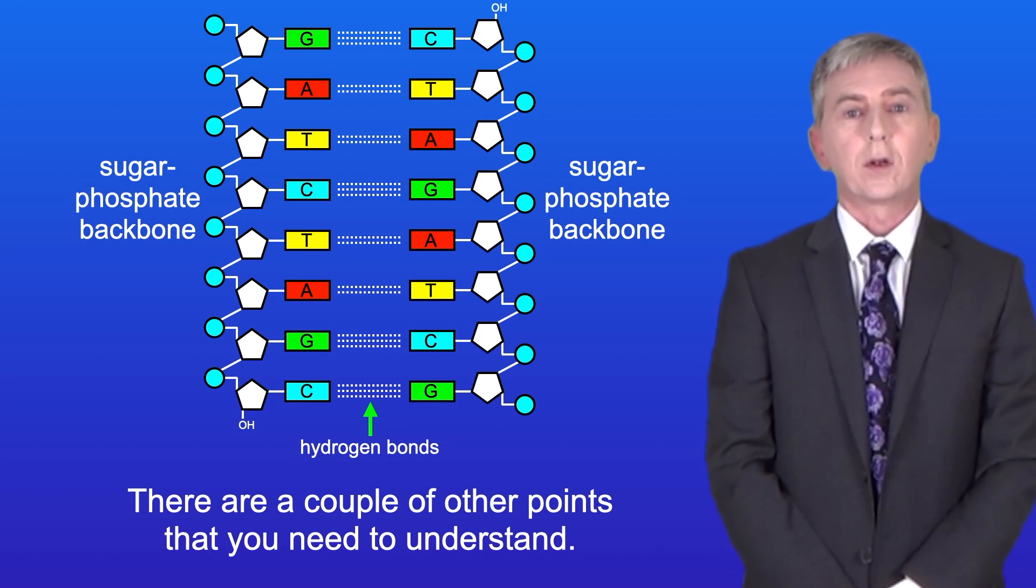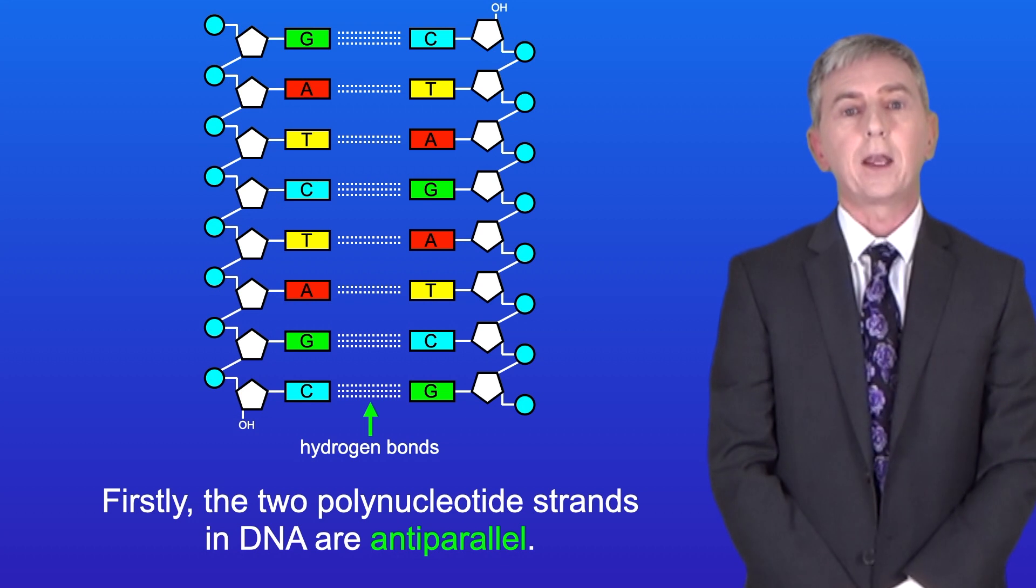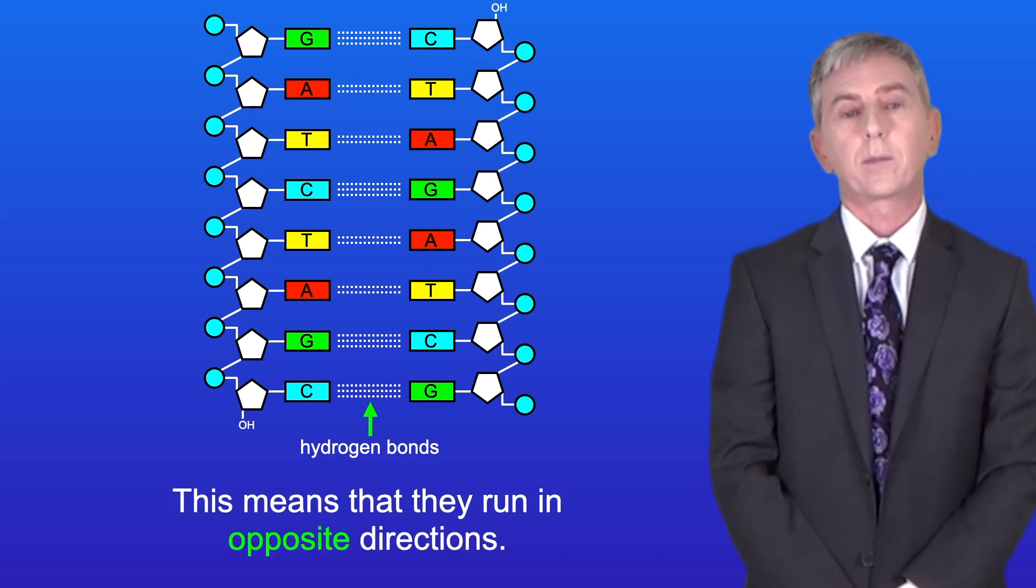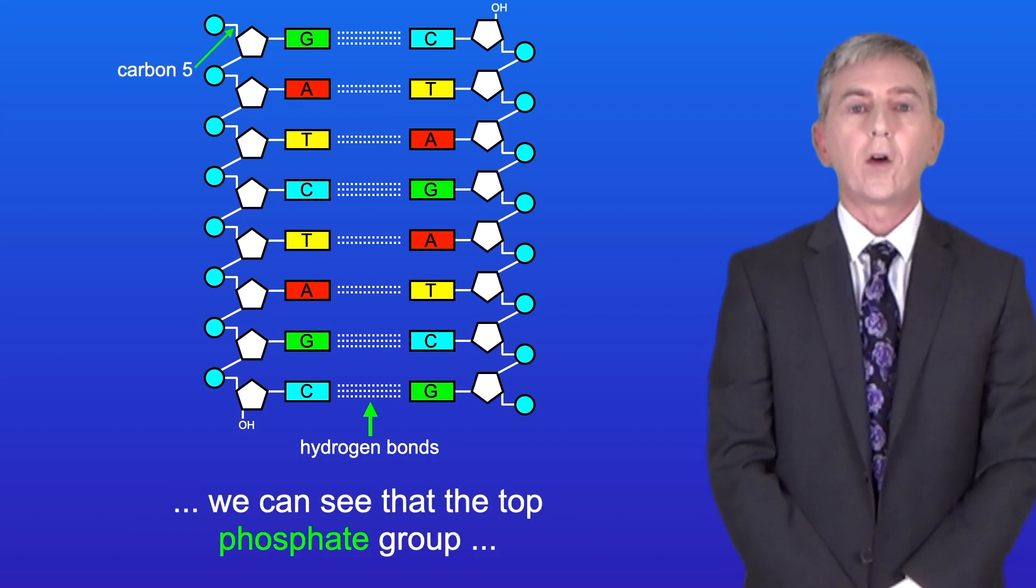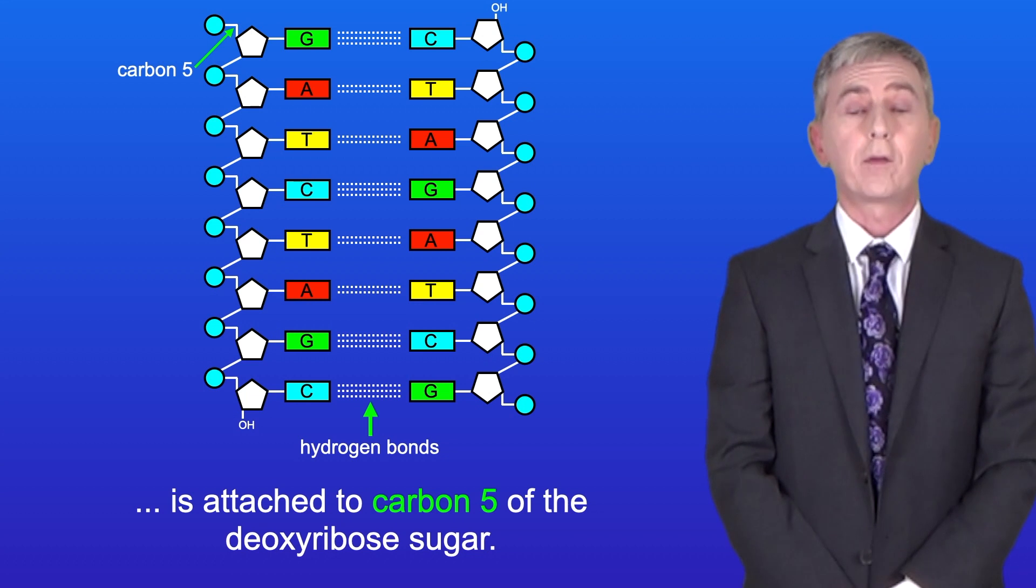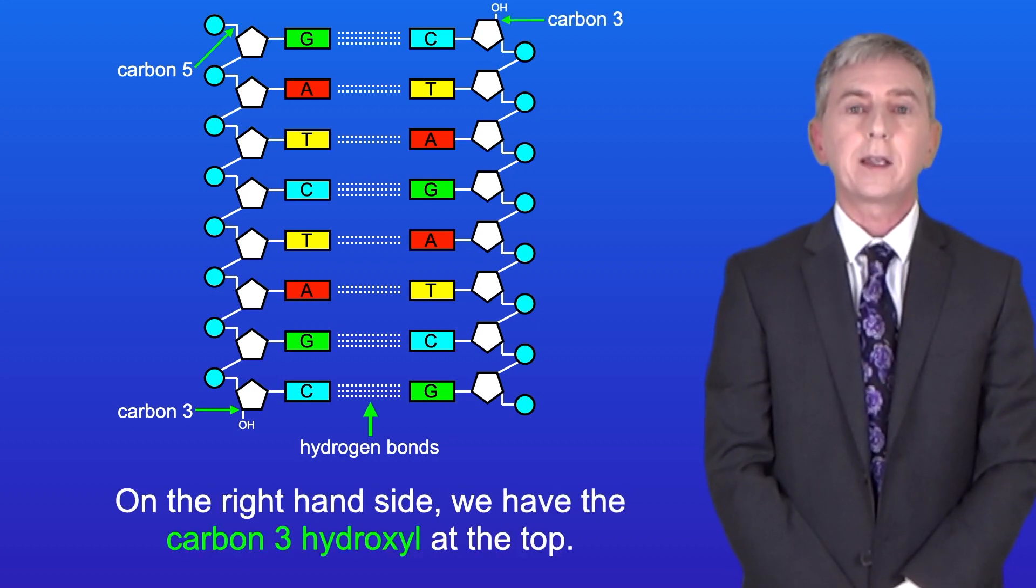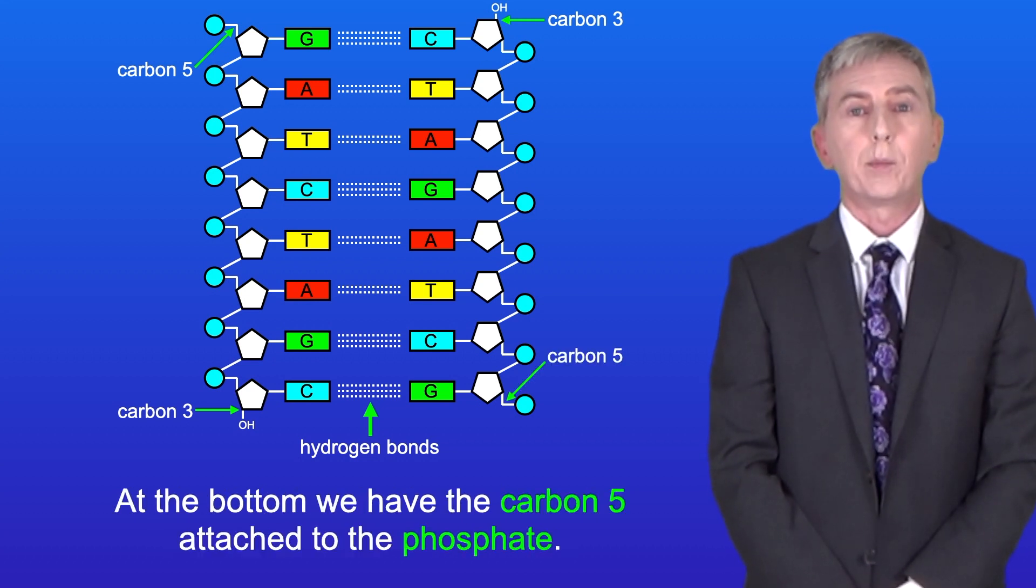Now there are a couple of other points that you need to understand. Firstly the two polynucleotide strands in DNA are anti-parallel. This means that they run in opposite directions. Looking at the left hand strand we can see that the top phosphate group is attached to carbon-5 of the deoxyribose sugar and at the bottom we've got the hydroxyl group attached to carbon-3. On the right hand side we have the carbon-3 hydroxyl at the top and at the bottom we have the carbon-5 attached to the phosphate.